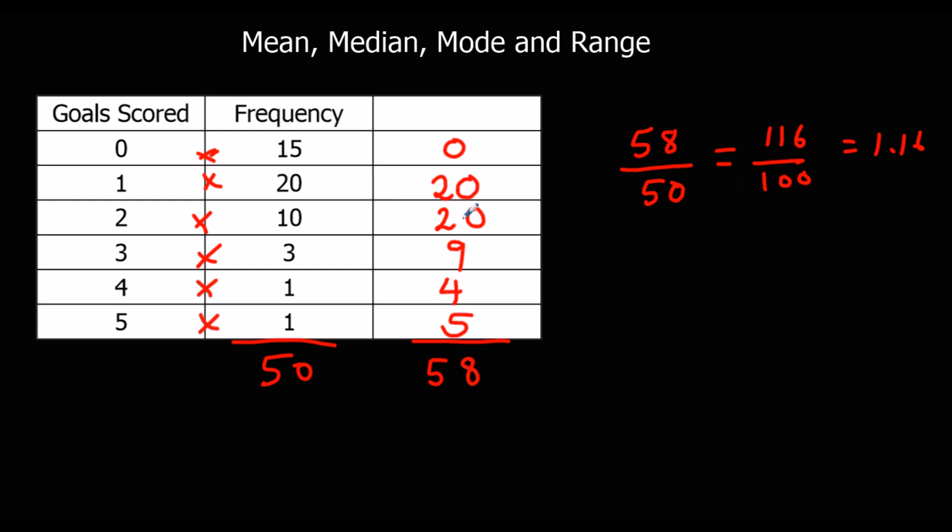But the method is what we're really looking for here. So to work out the mean, we have to times across, add down, and then the total of this column. The total, all the numbers added up. Divide by the total of this column, how many there were. So that's how we work out the mean from a table.